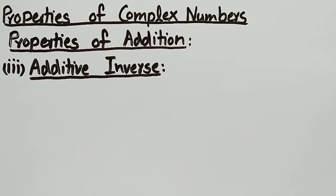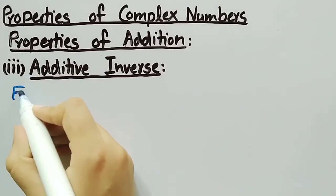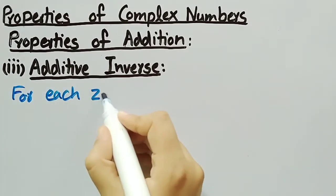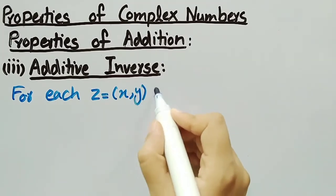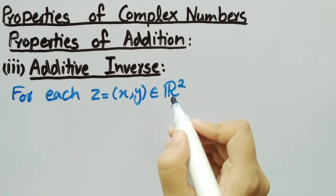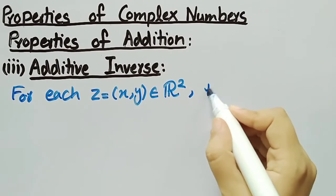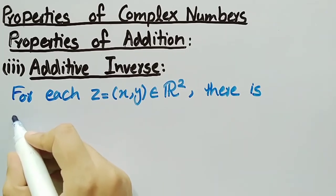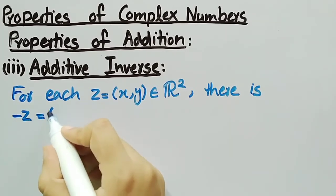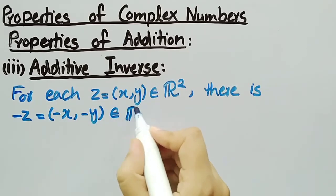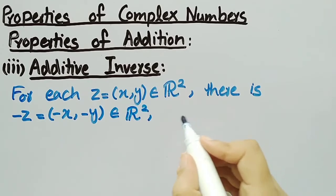The third property is the additive inverse of a complex number. For each complex number Z equal to (X, Y) belonging to R², there is a complex number negative Z equal to (minus X, minus Y) belonging to R², called the additive inverse of Z.